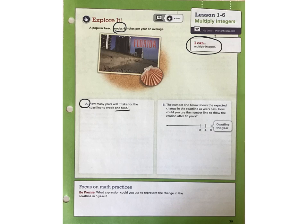We know that there are 12 inches in a foot. And if it's eroding 4 inches per year, we're looking for the amount of time it will take for it to erode 12 inches. In this problem, erosion would represent a negative integer. In other words, 4 inches of coastline are disappearing each year.